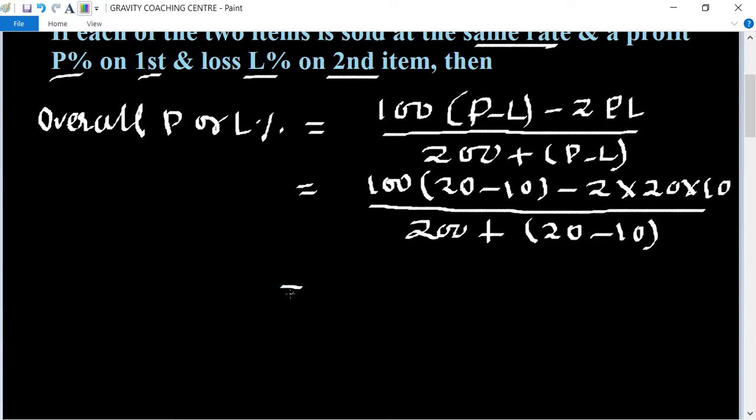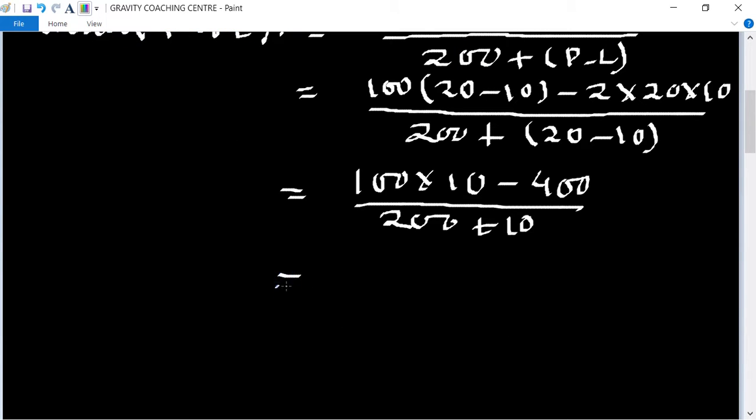Equals 100 times 10 minus 400, which gives 1000 minus 400 equals 600. So 600 upon 210. After canceling zeros, both numbers can be simplified.